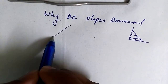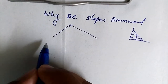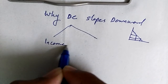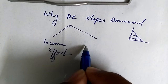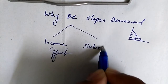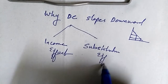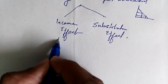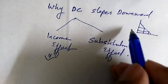There are two main reasons why the demand curve is sloping downward. It is because of the income effect and it is because of the substitution effect. Now what is the income effect? Actually there is no change in our income here.